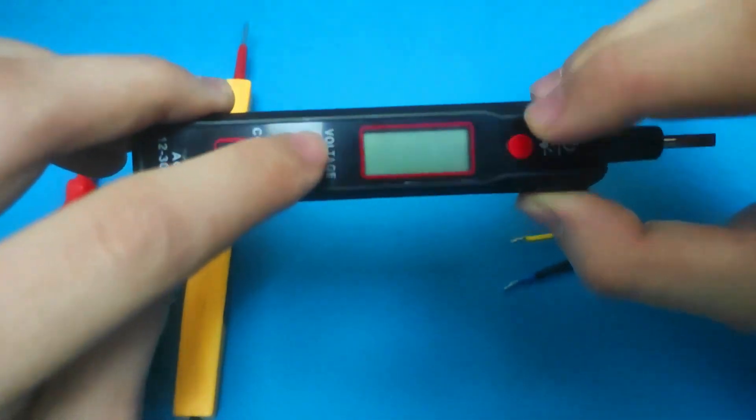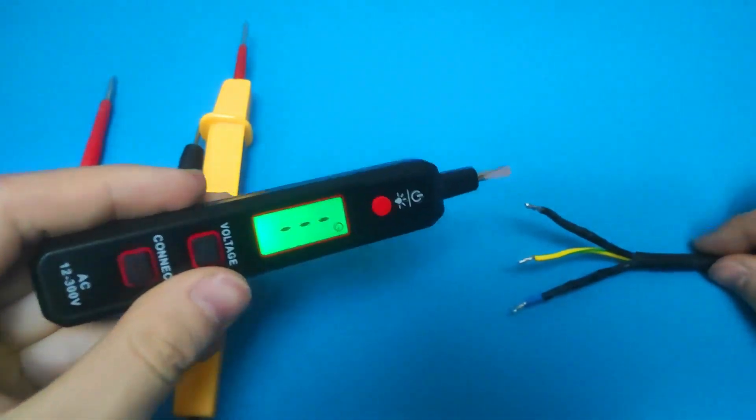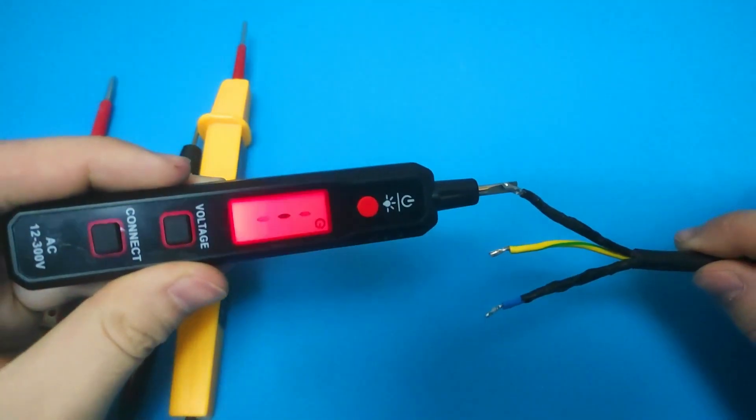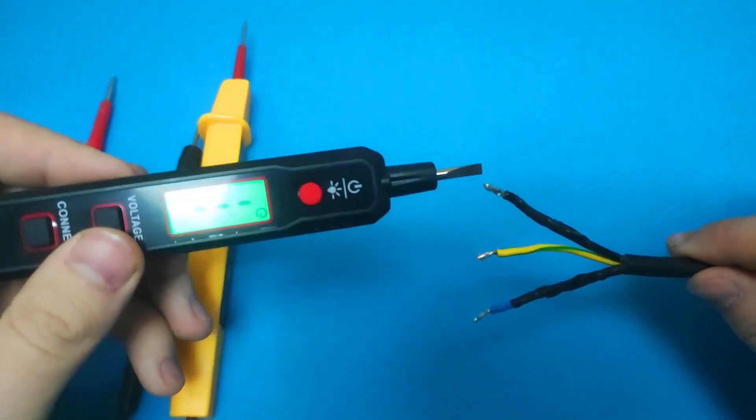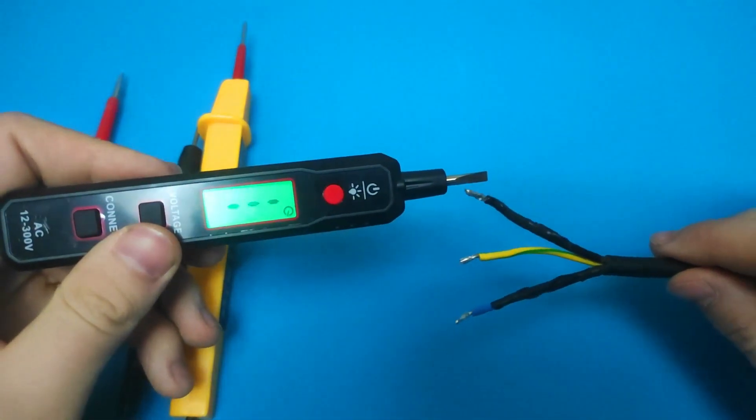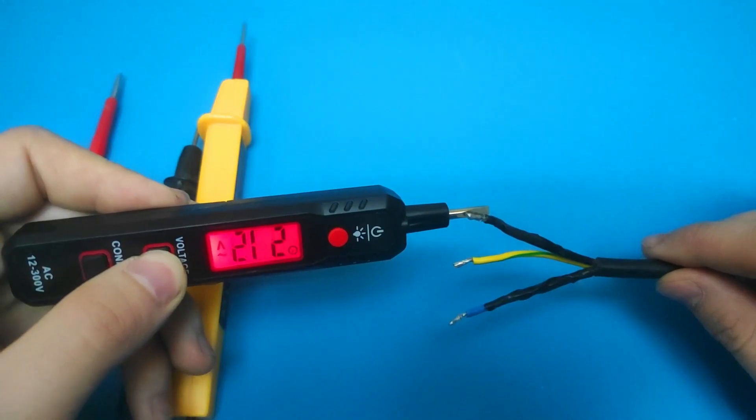Now we will test the voltage in the wires with KWITS VT500 voltage tester. It can detect current without contact, and by touching the wire and pressing a button, you get the exact voltage passing through the wire.